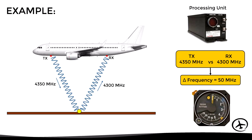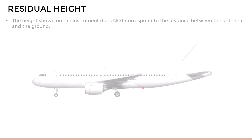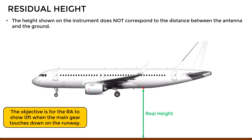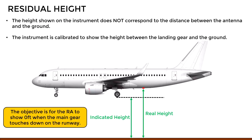Let's now see some important considerations regarding this system. One of them is the residual height. The height shown on the instrument does not correspond to the distance between the antenna and the ground, as we might think. This is because in practice, the objective is for the radio altimeter to indicate zero feet when the main landing gear touches down on the runway during landing. Therefore, the system is calibrated to show the height between the main landing gear and the ground. So the difference in height between the antenna and the landing gear is known as residual height.